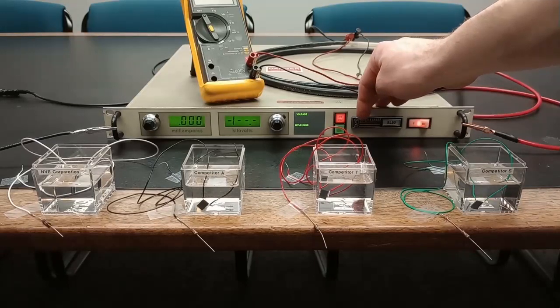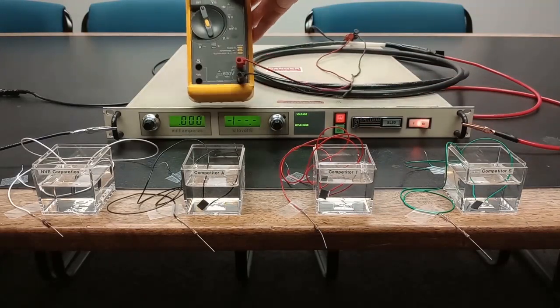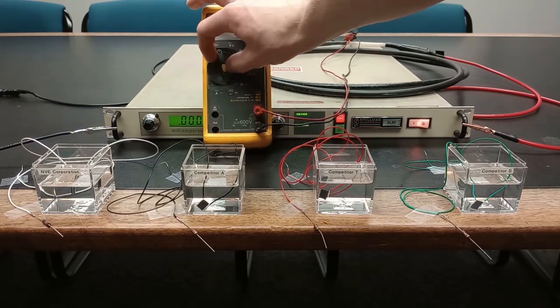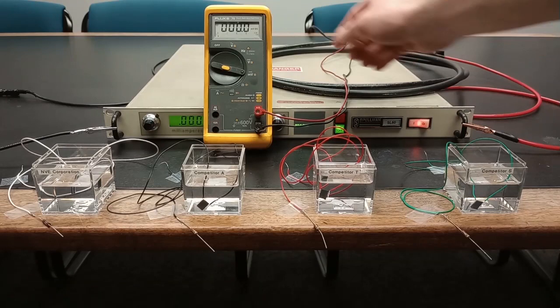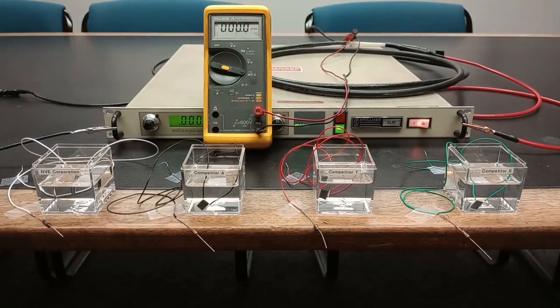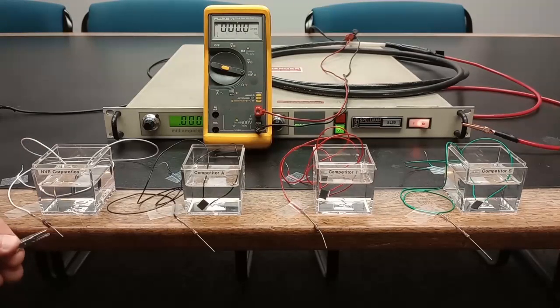We're using a Spellman SL60 supply we found on eBay. One kilovolt from the Spellman is equal to one millivolt displayed on the Fluke. We've immersed several commercially available isolators in a bath of transformer oil. By insulating the package exterior with oil we can test for true isolation barrier breakdown which could be deadly.